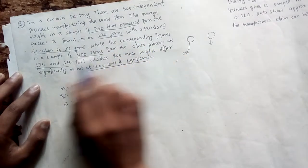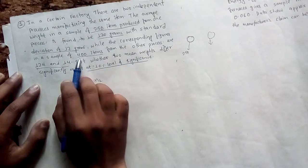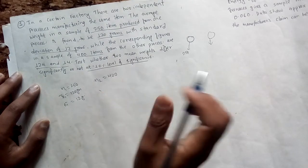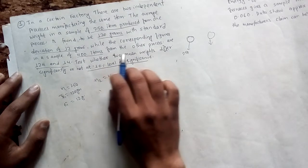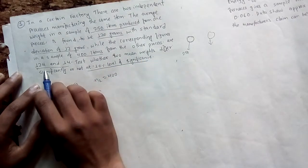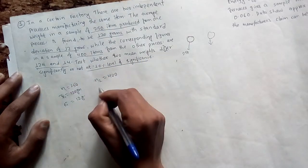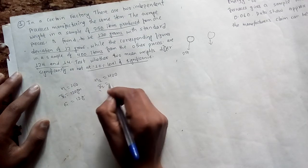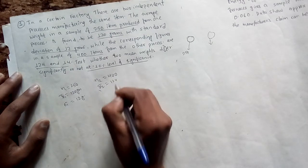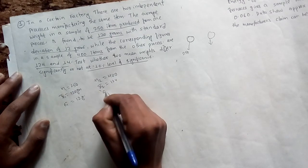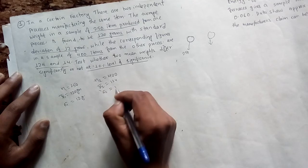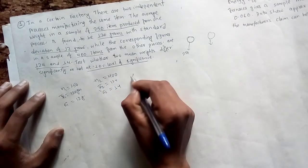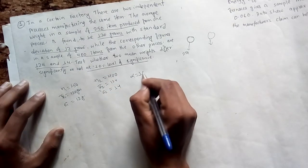This is a sample of 400 items, which gives x̄2 = 124 and sigma 2 = 14. The alpha value given is 10 percent.